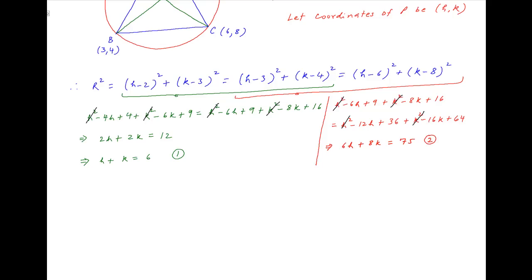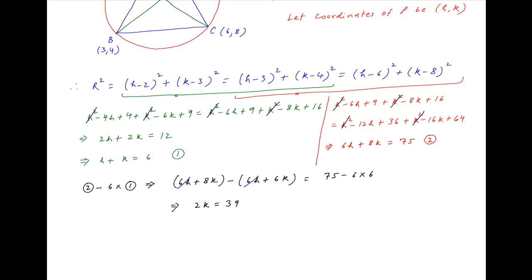Now multiplying equation 1 by 6 and subtracting from equation 2, we get 6H + 8K − (6H + 6K) = 75 − 36. This implies that 2K = 39, which implies K = 39/2. Using this in equation 1 we get H = 6 − K = 6 − 39/2 = −27/2.